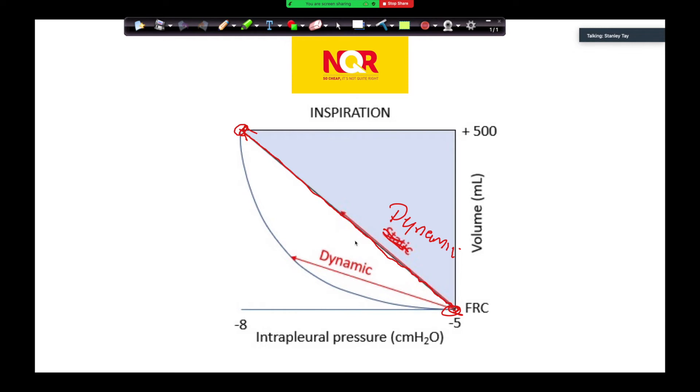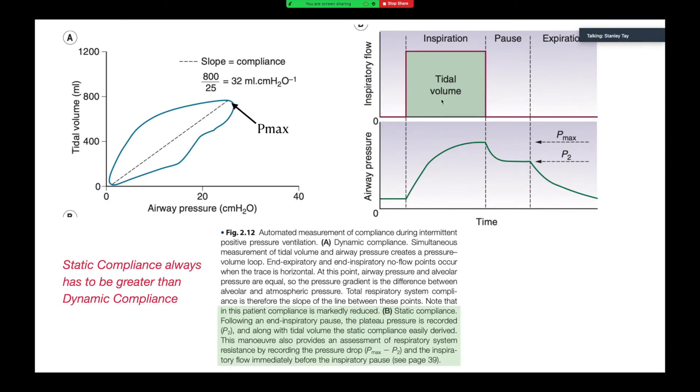Yes, I agree that if you had a pause, what would happen is this would drop here, and then you would have something like this. And therefore from here to here, that would be static. This is to explain what I mean by the peak pressures as well as the plateau pressures. So static compliance always has to be greater than dynamic compliance. Following an end inspiratory pause, the plateau pressure is recorded. Again, so this is the pressure time curve. P max is here. And this P2 is your plateau pressure.